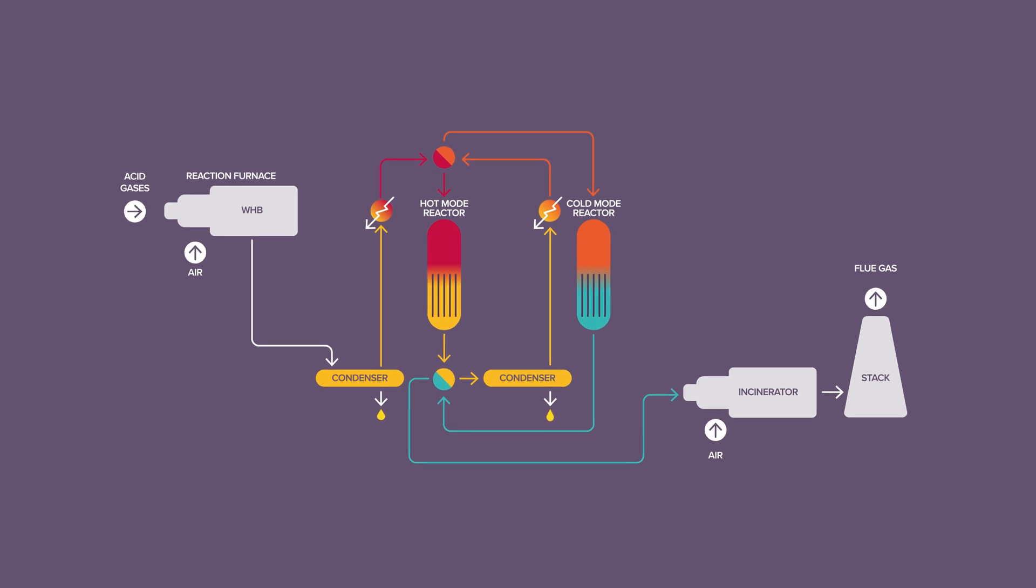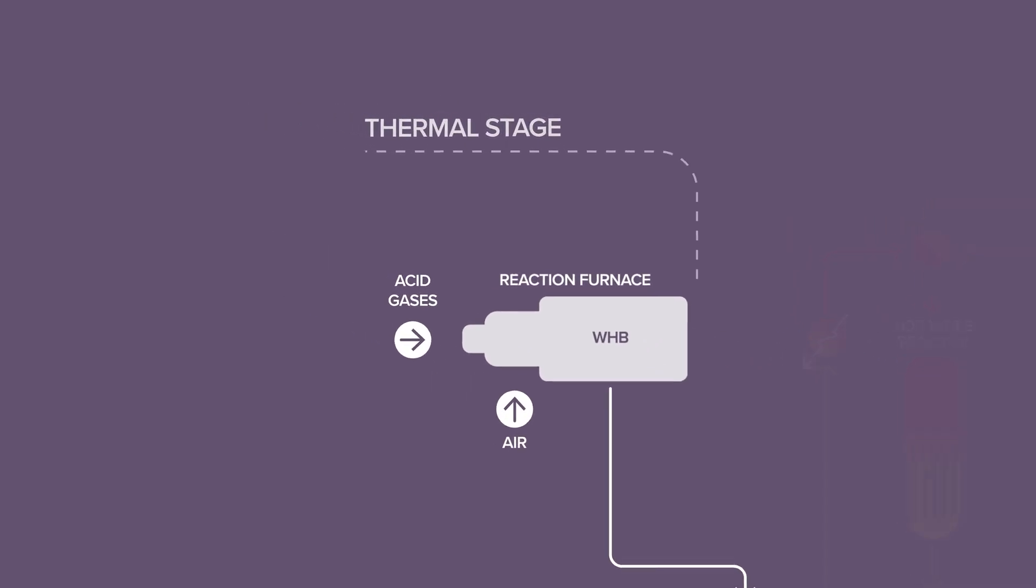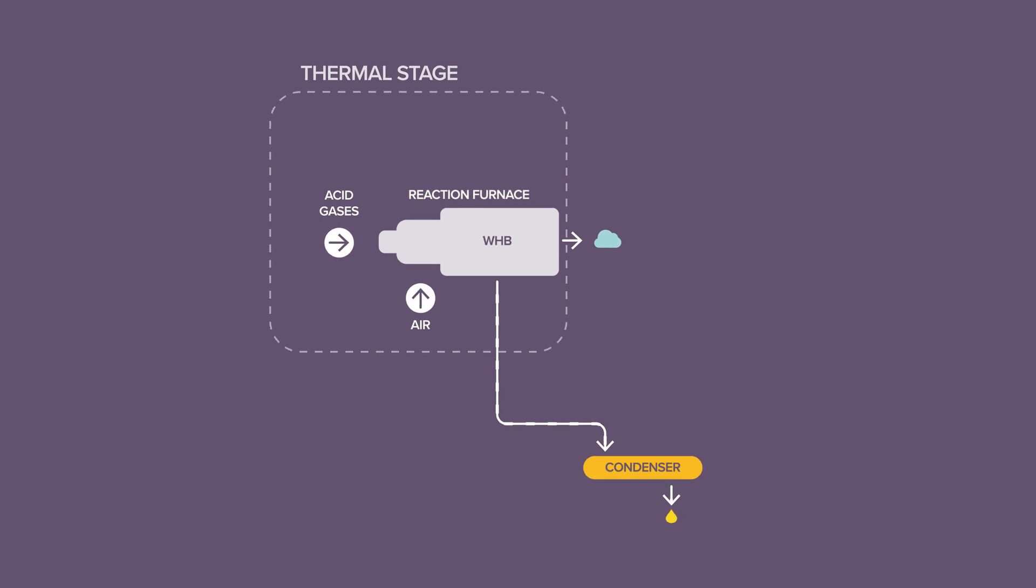This Klaus-based process is composed of two steps. First, a thermal stage where acid gases are burnt with air inside the reaction furnace. Then the hot gas is cooled down through a waste heat boiler which produces steam and then sent to the first sulfur condenser.